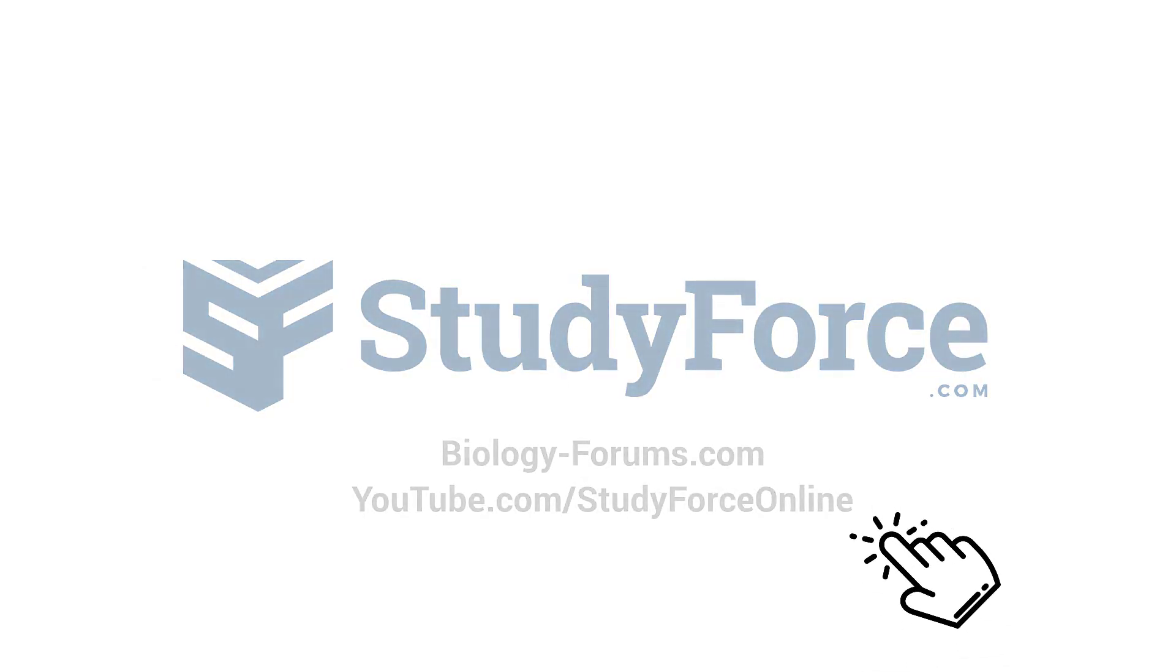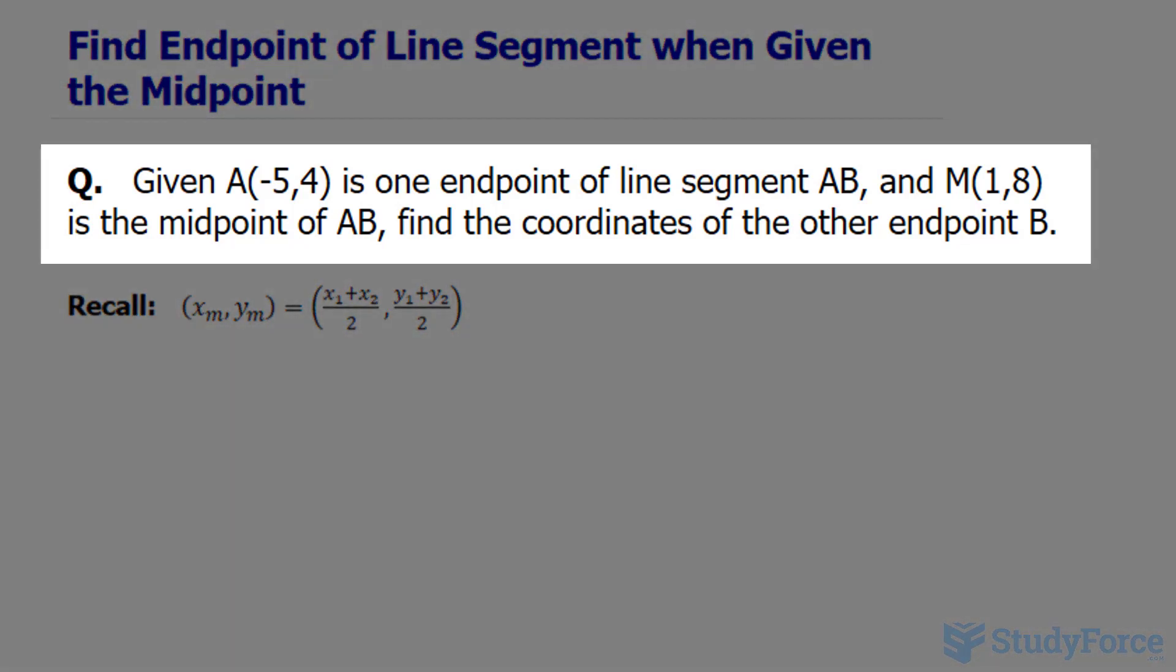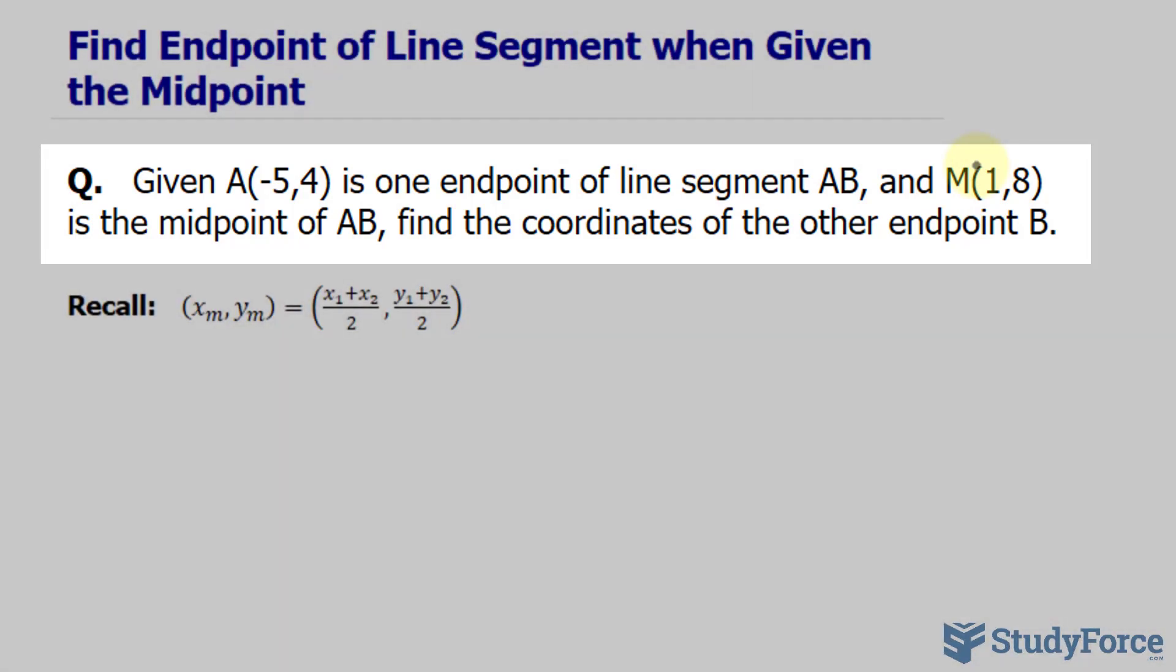In this lesson, I'll show you how to find the endpoint of a line segment when given the midpoint and one other point. The question reads: given the point A, which has the coordinates negative 5 and 4, is one endpoint of line segment AB and M, which has these coordinates, is the midpoint of AB, find the coordinates of the other endpoint B.